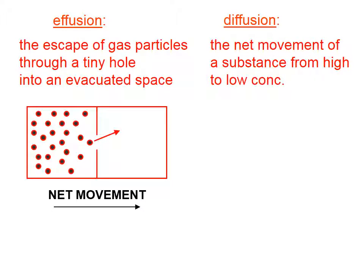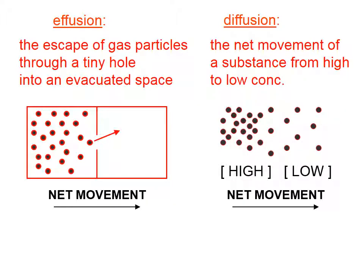Diffusion, on the other hand, is the net movement of a substance from high to low concentration. In this diagram, we have a relatively high concentration of particles on the left and a relatively low concentration of particles on the right. In such a case, there will be also a net movement from the high concentrated region to the low concentrated region. Which doesn't mean that there won't be some particles that go back the other way, but there will be a net flow from high to low concentration.